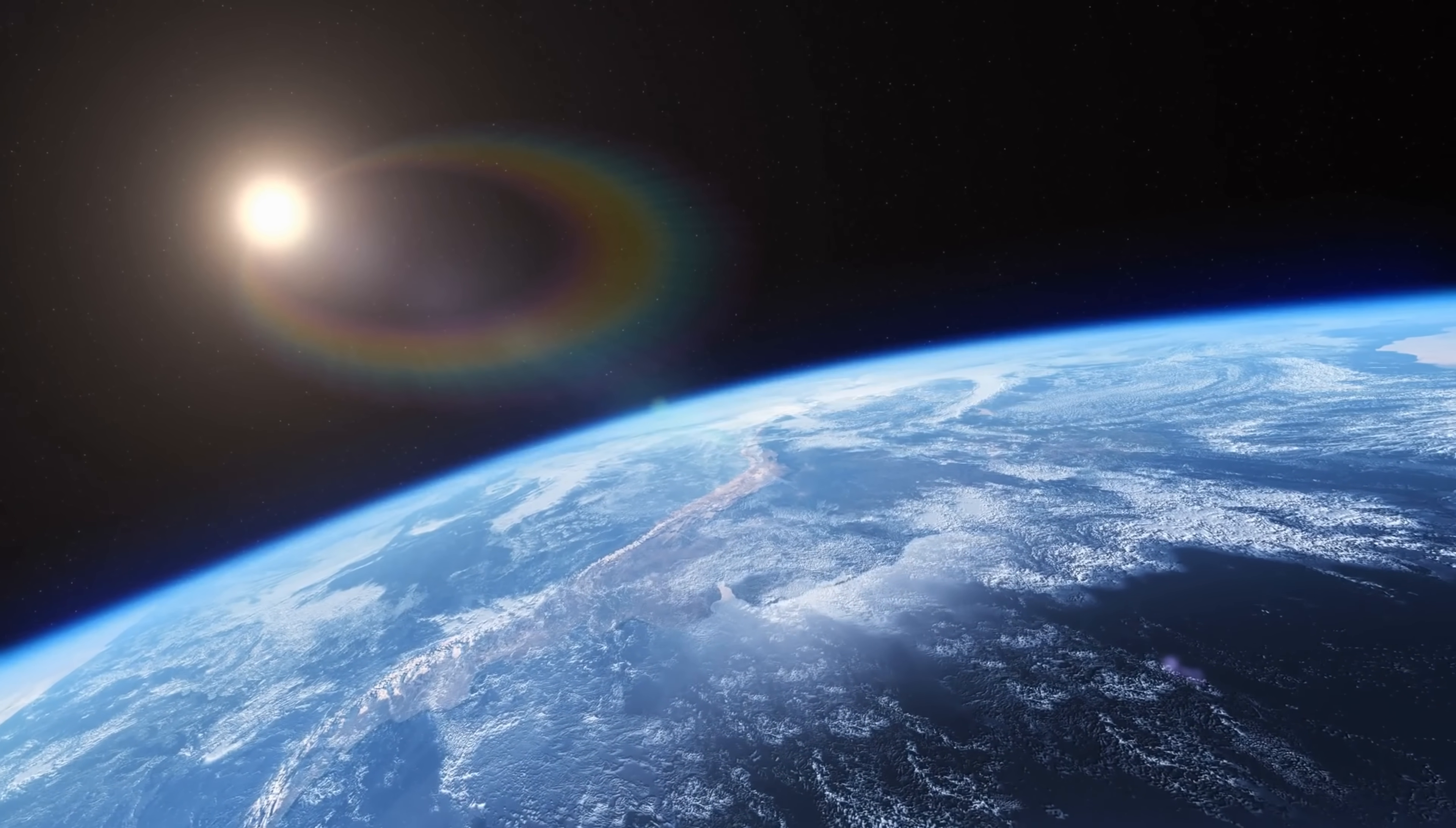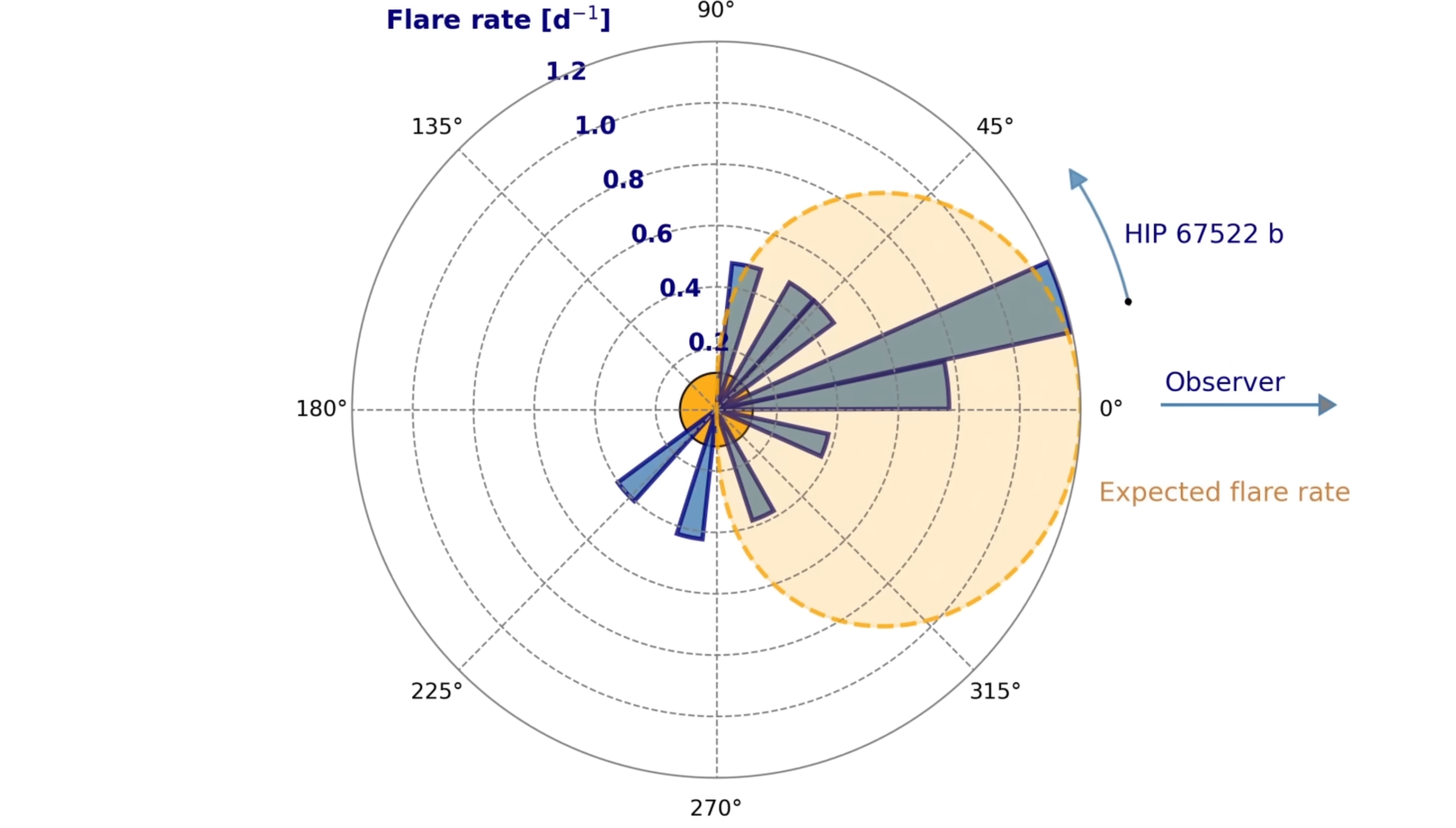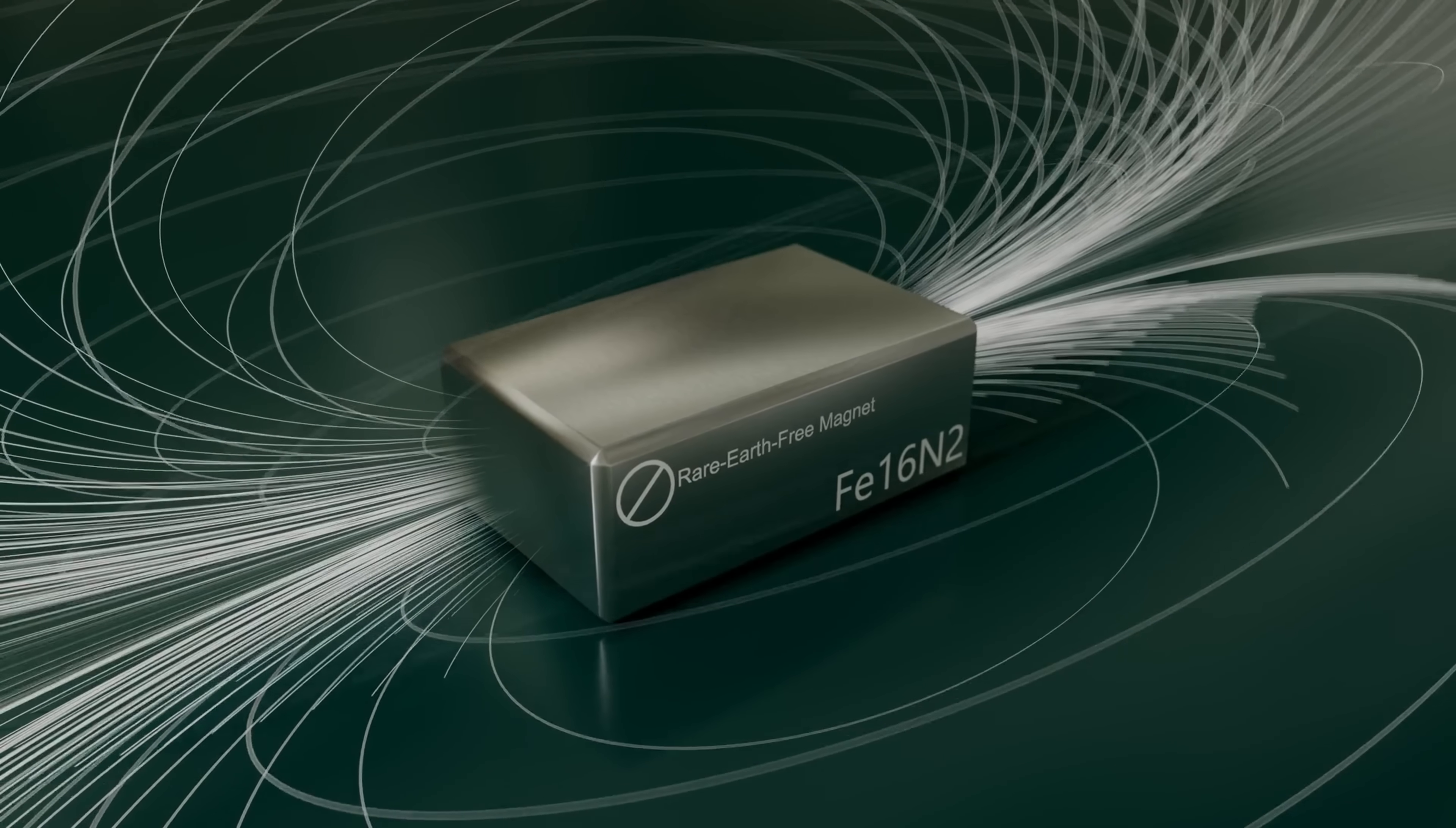Even though previously astronomers always believed that stars were pretty independent of planets and the planets could not produce any effects, here we have evidence that suggests otherwise. This planet definitely disturbed the magnetic field of the star.